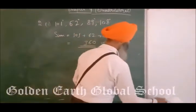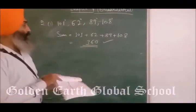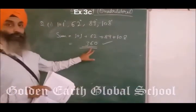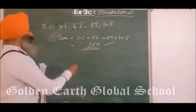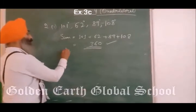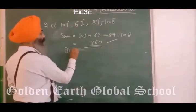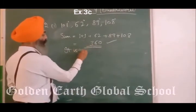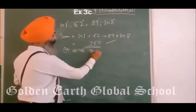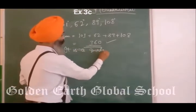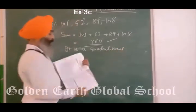Similarly, you can find the second and third parts. If the sum is 360, then it is a quadrilateral; if the sum is not 360, then it is not a quadrilateral. Write accordingly.